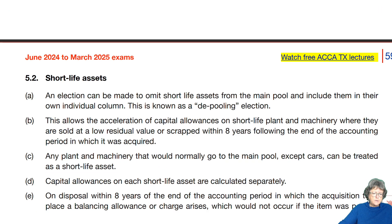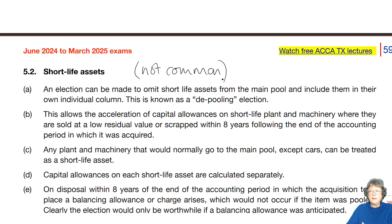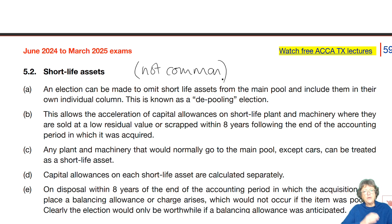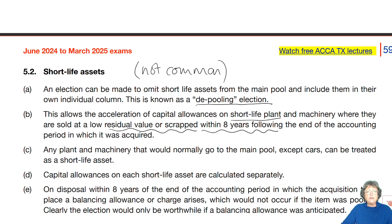Moving on, we sometimes have short-life assets, though this is not common anymore. It's worth being aware of the various rules. You can make an election to omit what's classed as a short-life asset from going into the main pool and put it in its own column, so you can calculate what's going on with that asset individually. This is known as a depooling election, and it applies if within eight years you're going to have a low residual value or you're going to scrap the asset.